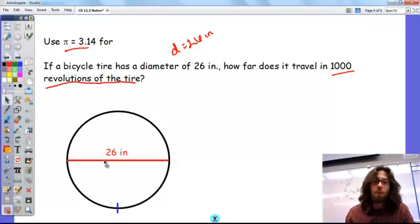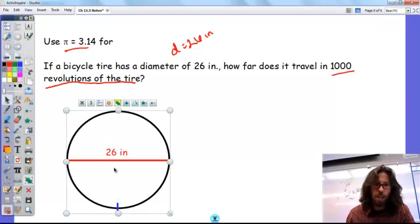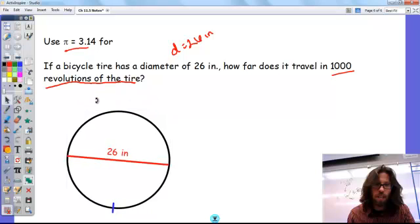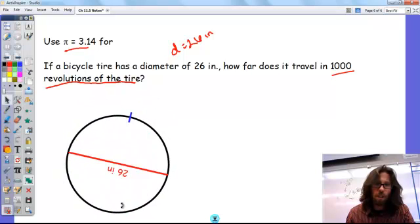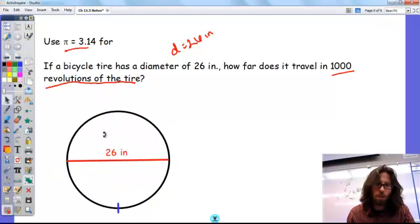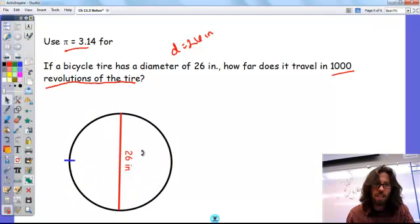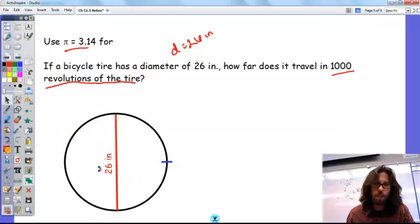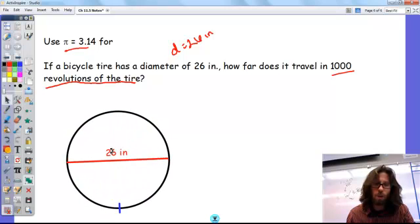Now, if you think about it, what we really want to know is if we have it just kind of rotating around here, that would be 1 revolution. Now, if we want to know how far that was, it's just basically traveling around the, it's a new vocab word, the circumference of the circle.